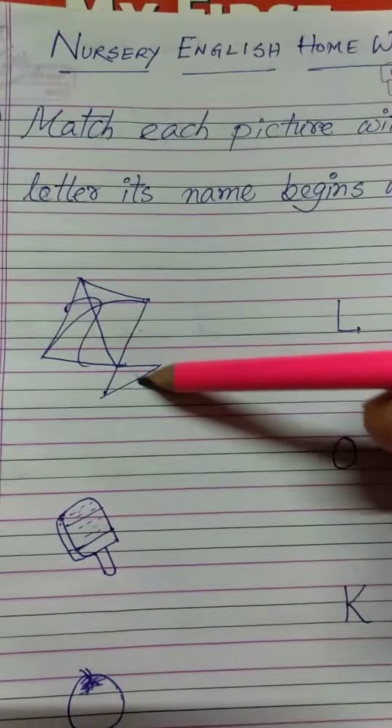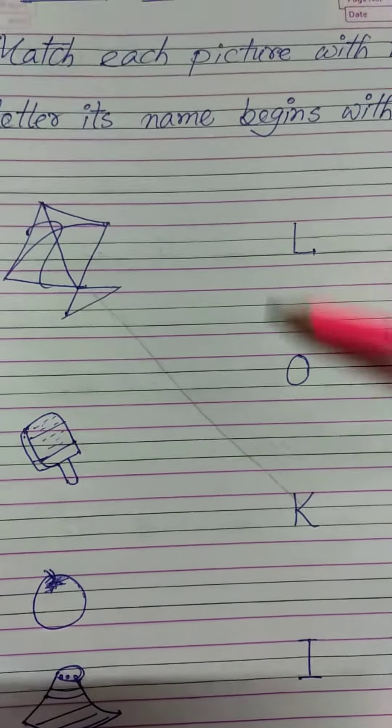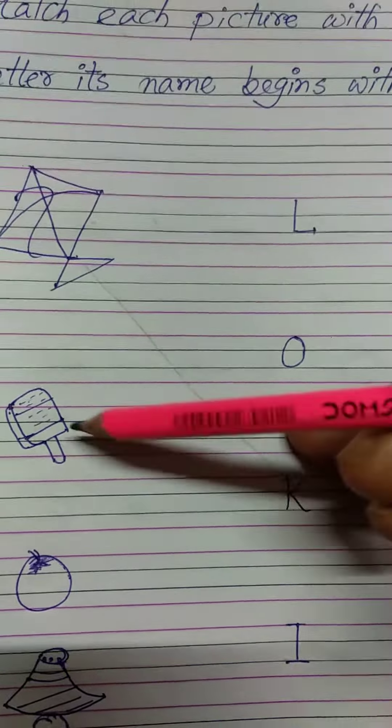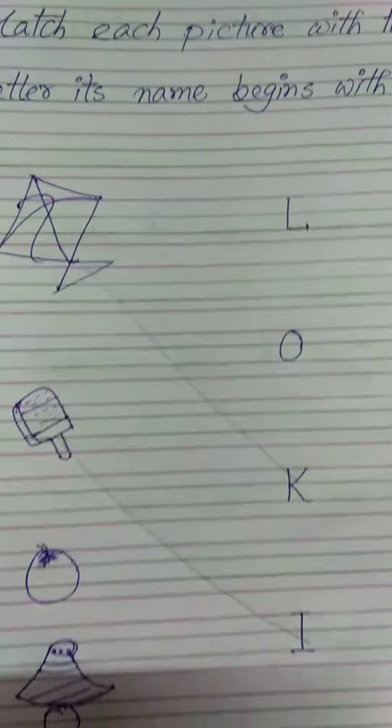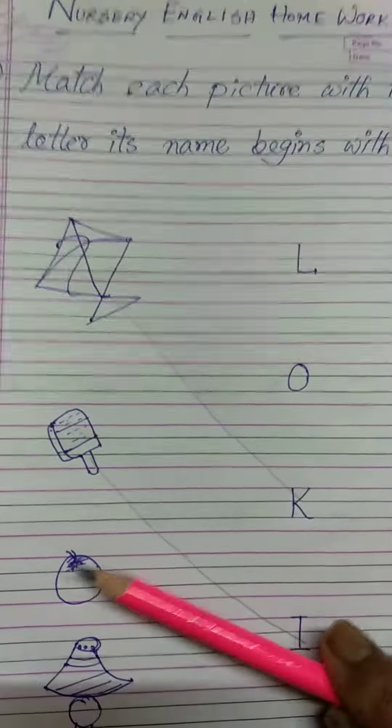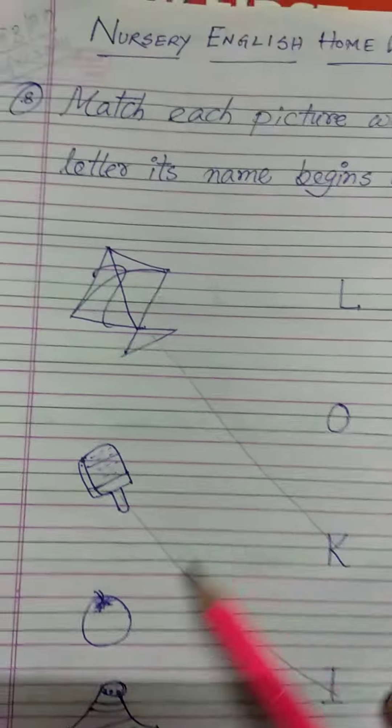This is ice cream. I is for ice cream, so you have to match it with I. This is an orange, so O is for orange, you have to match it with O.